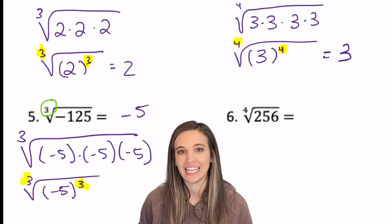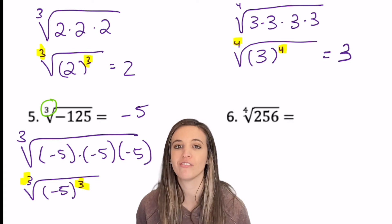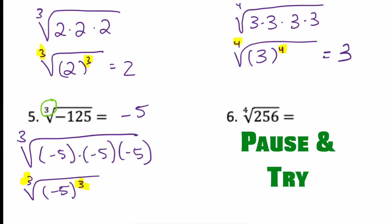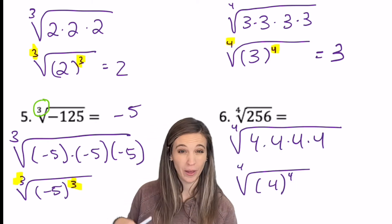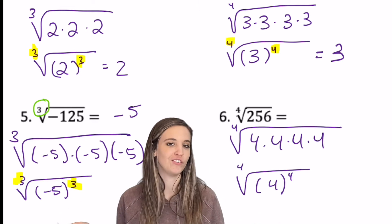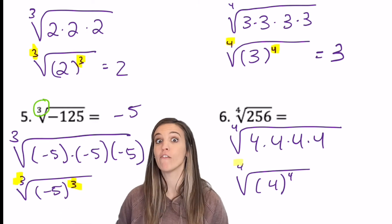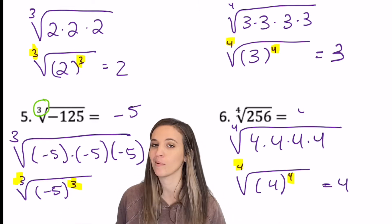Why don't you try six, the fourth root of 256? Since I knew four cubed was 64, if I multiply that by four again, that's 256. So the fourth root of four to the fourth is going to be four.